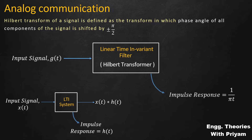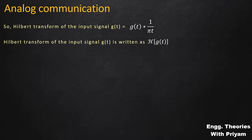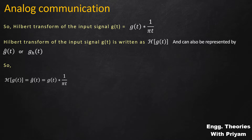The Hilbert transformer, which is also an LTI system, produces the output in a similar manner. The output is the convolution of the input g(t) with the impulse response 1/(πt). This output is known as the Hilbert transform of the input signal g(t). So the Hilbert transform H{g(t)}, written as ĝ(t) or g_h(t), equals g(t) convolved with 1/(πt).